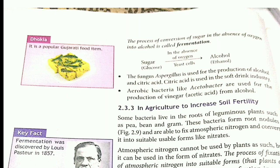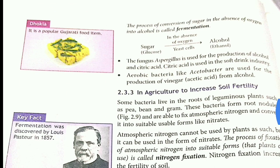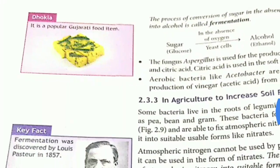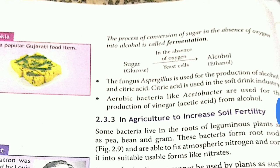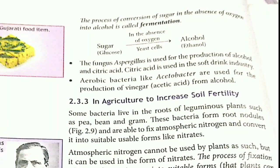Here it was explained using the example of Gujarati dhokla, which looks very good and tastes great. The process of conversion of sugar in the absence of oxygen into alcohol is called fermentation. Fermentation means 'sadana galana' — if something ferments in the presence of yeast and in the absence of oxygen, it becomes alcohol.